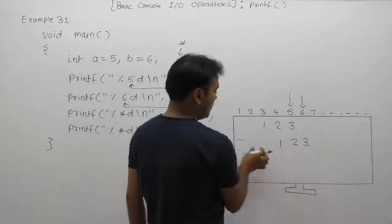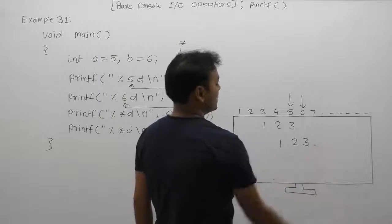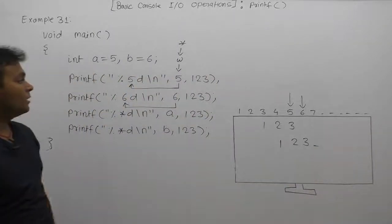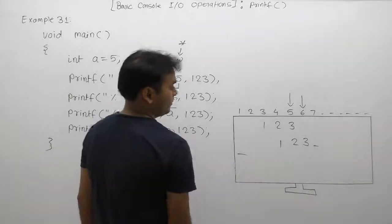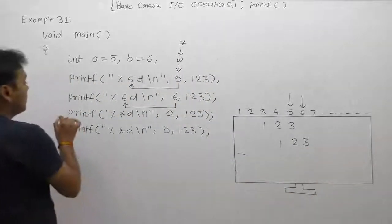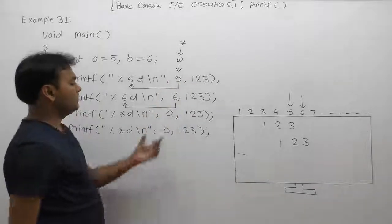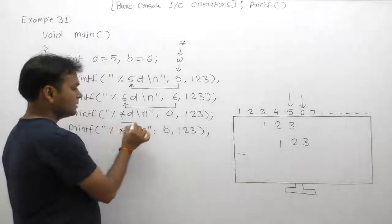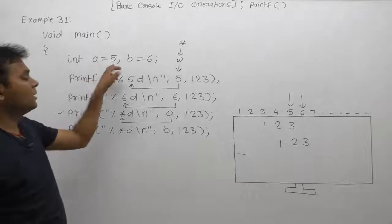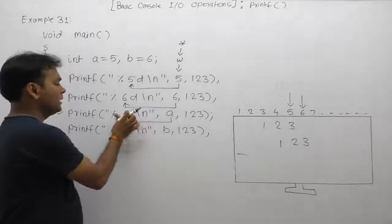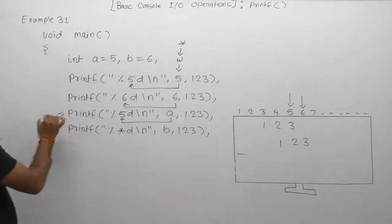So the output shows 3 spaces, then 1, 2, 3, and the cursor is available at the next position, but according to \n the cursor shifts to the beginning of the next line. In the next printf, we are supplying the value of variable 'a' in place of the asterisk. The value of 'a' is 5, therefore the logical equivalent meaning is %5d — again the same as the first case.